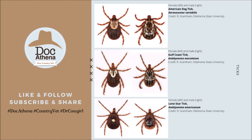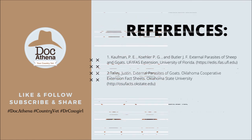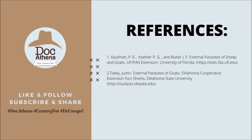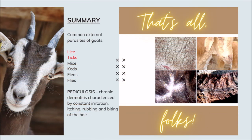Those are the different ticks reported to be present on goats. For our references, we would like to thank Kaufman, Koller, and Butler from the University of Florida Extension, as well as Justin Talley from Oklahoma State University Cooperative Extension, for their illustrations of the different lice and ticks reported in goats. In summary, the most common external parasites of goats include lice, ticks, mites, keds, fleas, and flies. Please watch Parts 2 and 3 for discussion of the other parasites. Pediculosis is a chronic dermatitis characterized by constant irritation, itching, rubbing, and biting of the hair.